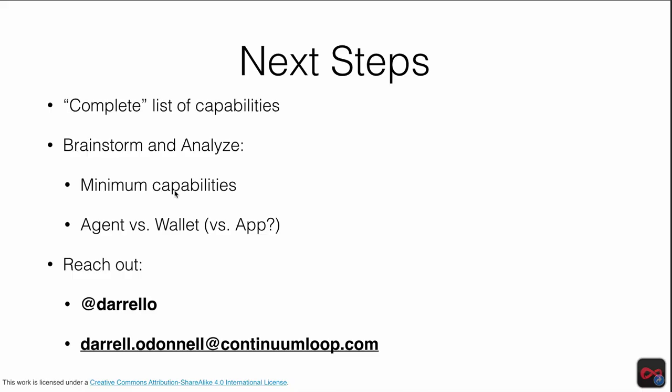My next steps: I'm working with a few groups in Canada to complete this report — it won't be a definitive canonical list, just the state of thinking at the time. We'll brainstorm and analyze, and anyone who wants to jump in is welcome. Key questions: what are the minimum capabilities, and what is an agent versus a wallet versus an app? If you want to participate and get on a few sessions, you can reach out to me on Twitter at Daryl Lowe, or by email, or on Slack and Rocket.Chat.